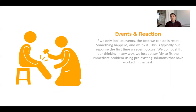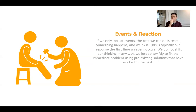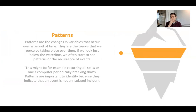For each of those levels there's a way of responding. If we look at the world at the event level, we're going to react to whatever's happening and try to stop or change it on that level. We do not shift our thinking in any way — we just act swiftly to fix the immediate problem using pre-existing solutions. So when there's a financial crisis, the central bank tries to do what it can to prevent that financial crisis. It takes immediate action, but it's not going to stop the pattern of financial crises in the world over time — it's just going to prevent that particular event. Which is not necessarily a bad thing; they probably do need to do that. But it's not going to change the system.